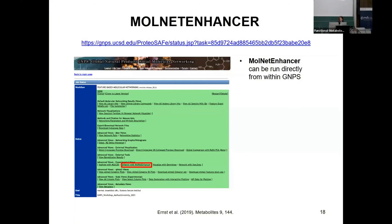MolNet Enhancer can be run directly within GNPS. Before running it, you also need to do in silico structure collection. As MolNet Enhancer is set up on GNPS, it accepts in silico structure input from network annotation propagation. So before starting MolNet Enhancer, we also need to run an in silico structure annotation through network annotation propagation.